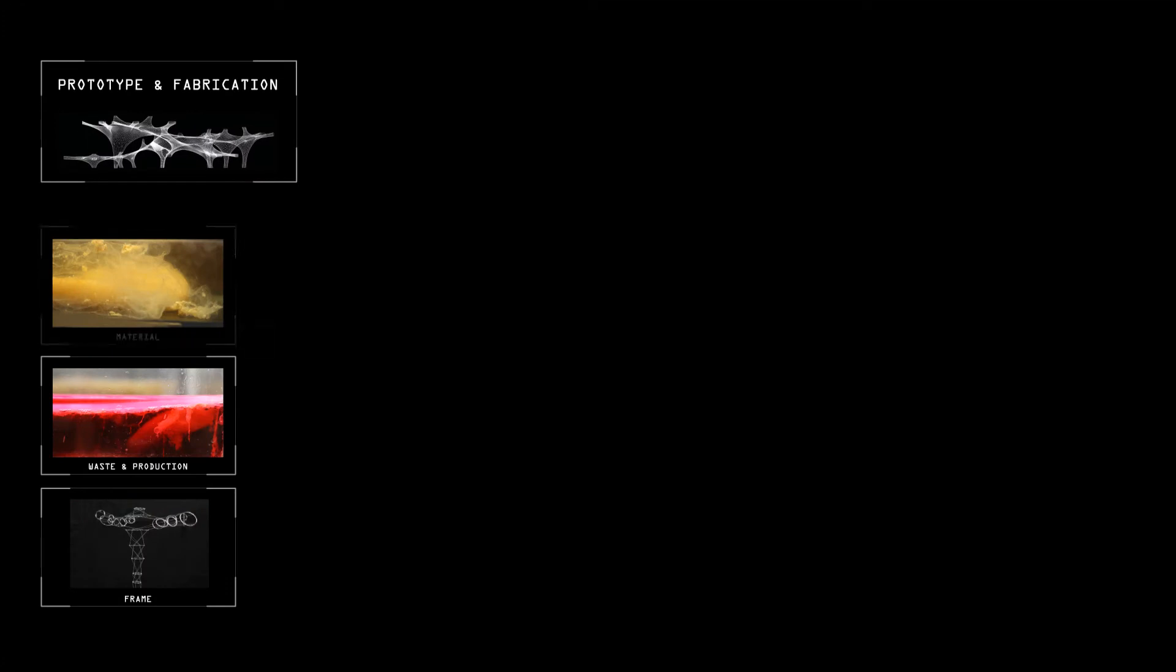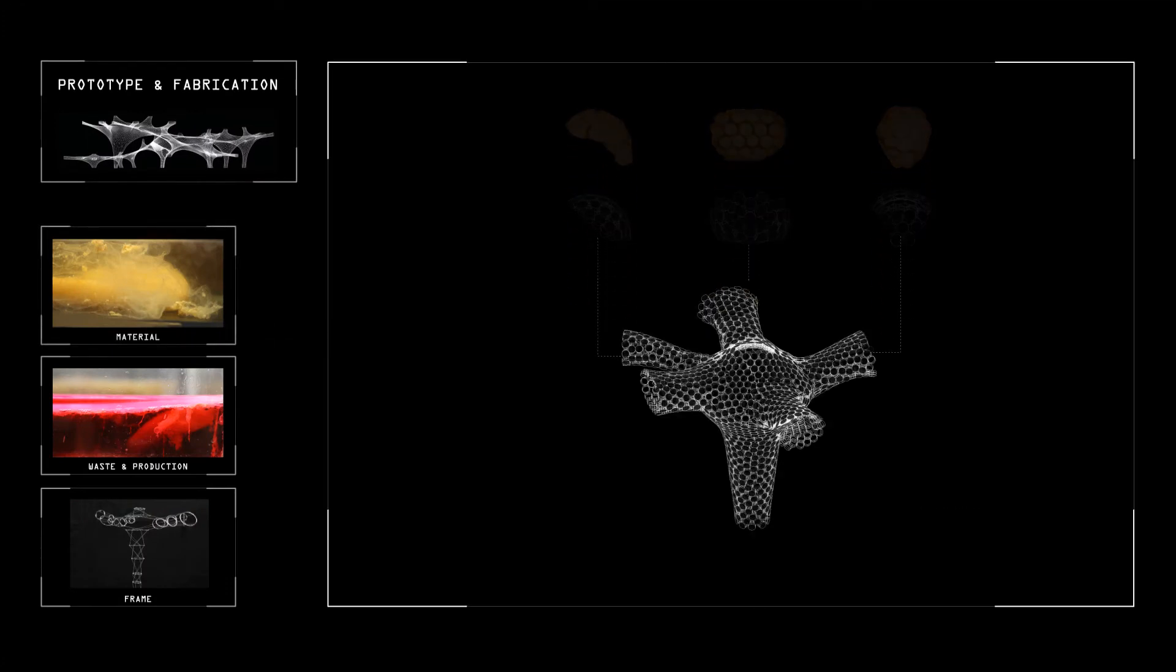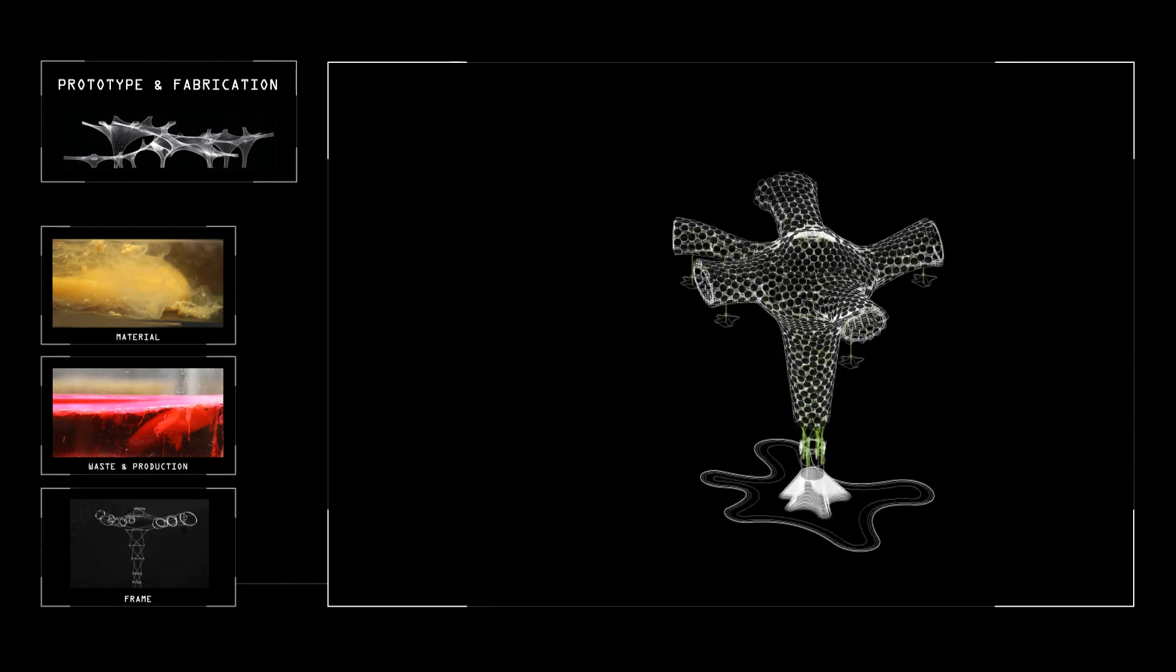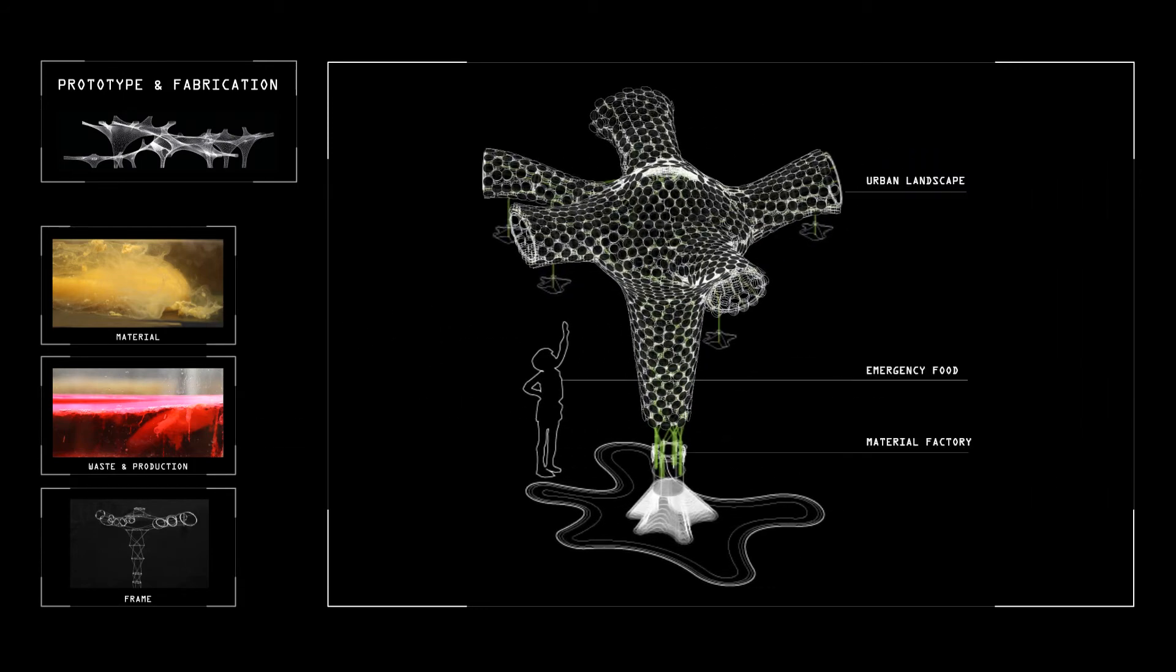In the last chapter, the project developed the material system into bigger structure and built an urban prototype. The functions can be urban landscape, emergency food farm, and material factory.